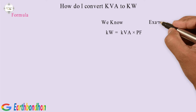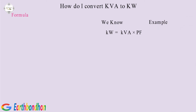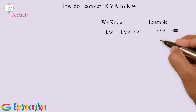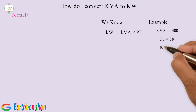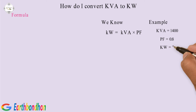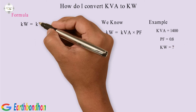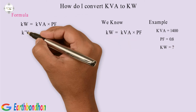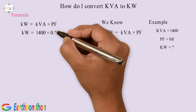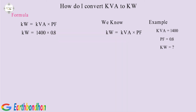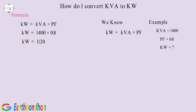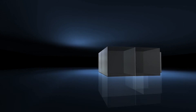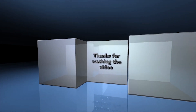Example: KVA equals 1400, Power Factor equals 0.8, Kilowatts equals unknown. Solution: 1400 multiplied by 0.8 — Kilowatts equals 1120. Thanks for watching the video.